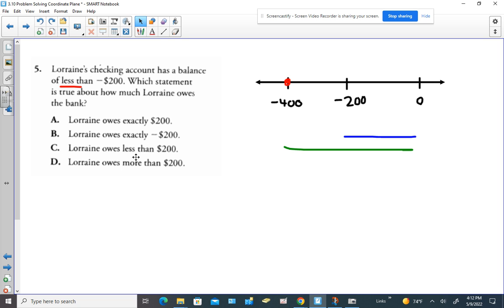C, Lorraine owes less than $200. So if this represents what she owes, is this amount less than this amount? Because remember, this is the owing $200 line. Isn't that a bigger line than the blue line? The green line is a bigger line than the blue line.